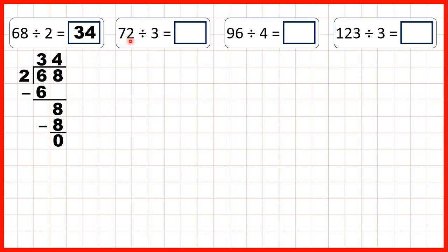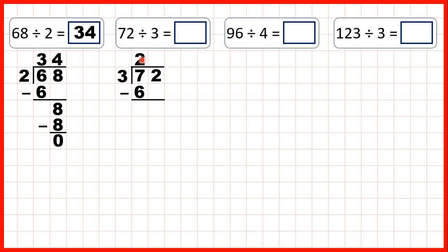Now let's try 72 divided by 3. We can set the question out in the same way, and again we start by dividing the digit that's in our tens. Now 7 isn't in the 3 times table, so we need to think of the number in the 3 times table that's as close to 7 as possible, but not more than 7. That's 6, and because 6 divided by 3 is 2, or 2 times 3 is 6, we can write 2 in our answer line.